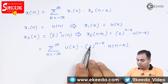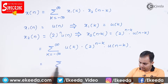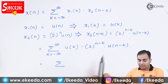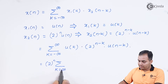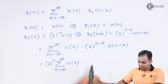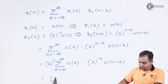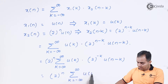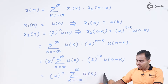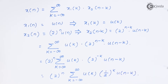Now, 2^(n-k) can be split as 2ⁿ × 2^(-k). Taking 2ⁿ common outside the summation, we are left with the sum of 2^(-k) times the product of the step functions inside. We can rewrite 2^(-k) as (1/2)^k.